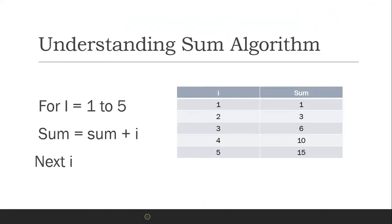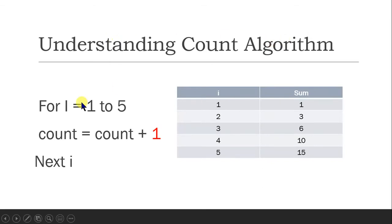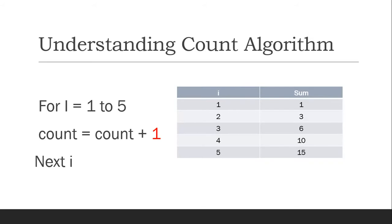When we talk about counting, we have the same logic. For i equals 1 to 5, count equals count plus 1. Every time we want to count a new instance we increase by 1. Suppose we are reading data and we want to say if this is less than 0, count equals count plus 1. At the end of the loop we will know the total number of items or instances which are less than 0. Whenever the condition is true it increases count by 1, otherwise it will not.